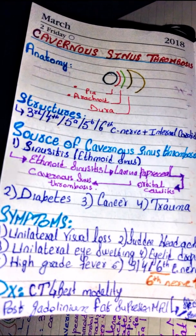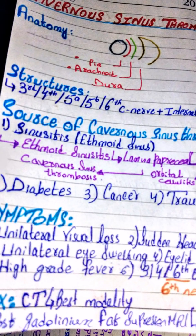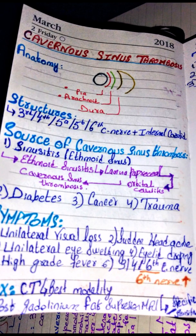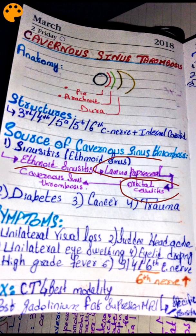Now let's see the sources of cavernous sinus thrombosis. The first and most important source is sinusitis, especially ethmoid sinusitis. In ethmoid sinusitis, infection passes through a very thin bone called the lamina papyracea into the orbit, causing orbital cellulitis. Orbital cellulitis is a mild form of cavernous sinus thrombosis that involves the orbit but not the brain.